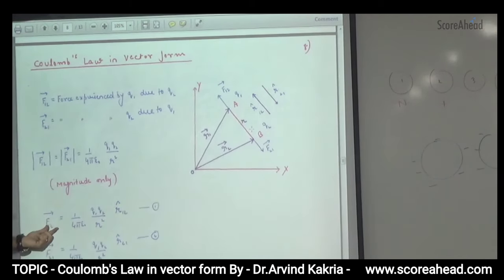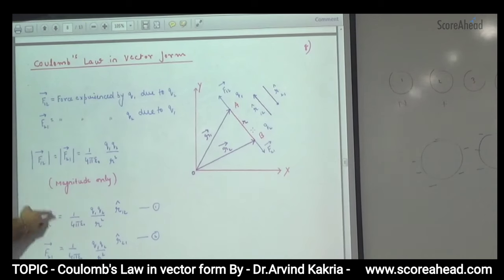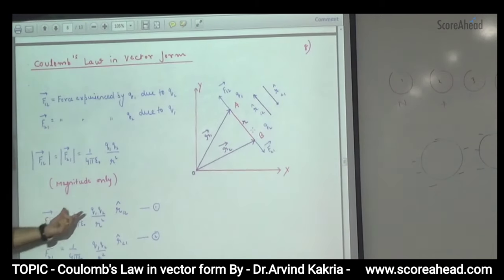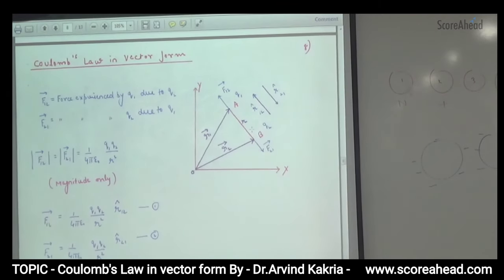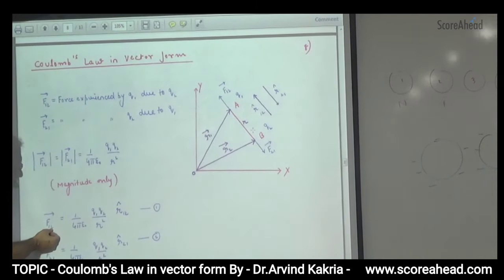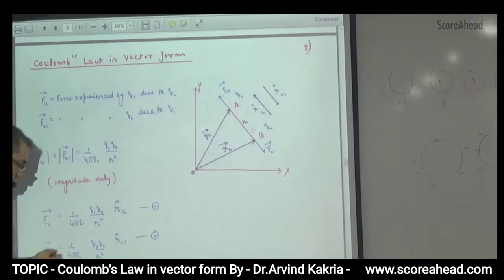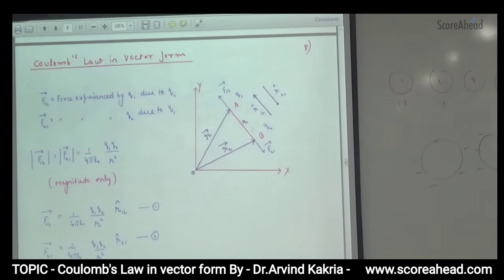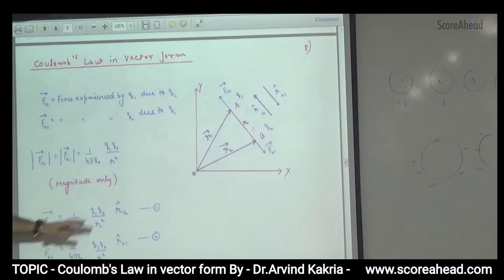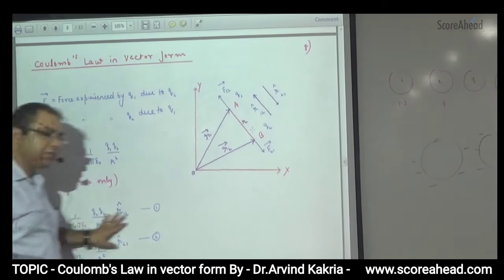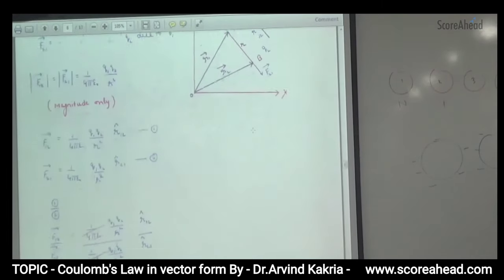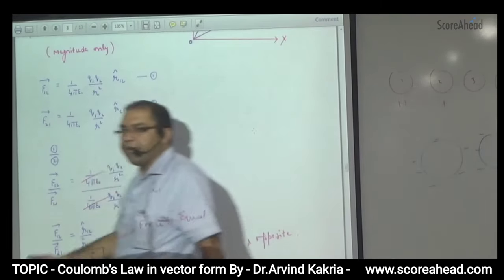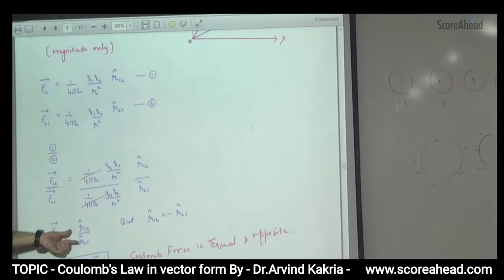But what do we have to write? The vector form. So F12 vector equals 1 over 4π epsilon-zero times Q1 Q2 over R squared, and then we multiply by the unit vector to give direction. For F12, we use unit vector R12 cap; for F21, we use R21 cap. A unit vector is simply a vector divided by its magnitude — when we divide, the magnitude cancels and only the unit vector remains.